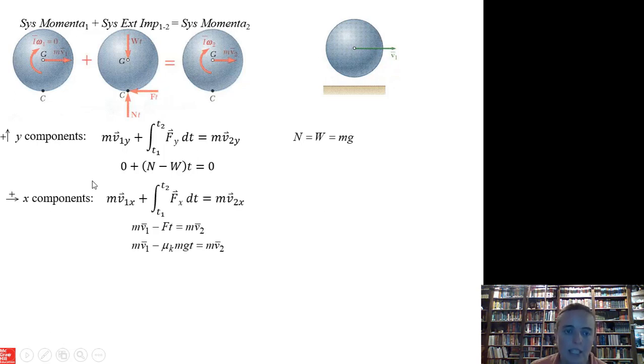For the x direction, a little more is going on. We have our initial mvx coming in. What forces are in the x direction? That's our friction force. We have kinetic friction until the very end. So μk times our normal force, which we saw as mg, times t. That's our force times time, and it gets us to our new linear momentum, mv2.